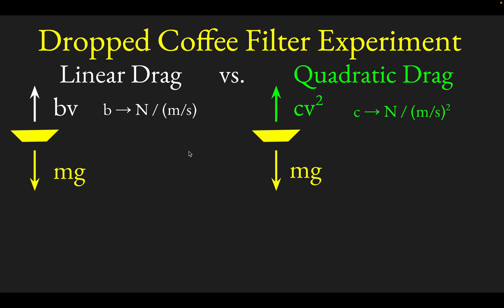If you want to find the terminal velocity, that is the velocity, the maximum velocity the object will reach when you drop it, you can simply set mg equal to BV. What you'd find out is the terminal velocity would be mg over B. That just comes from setting the force of gravity mg equal to the linear drag force BV.